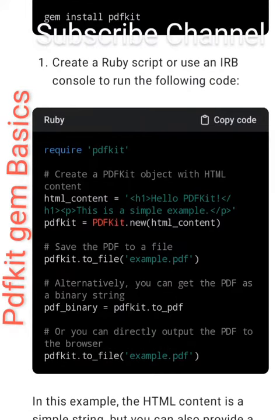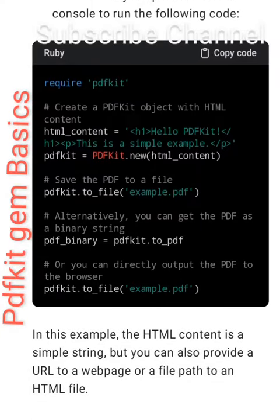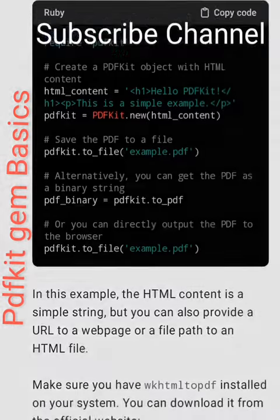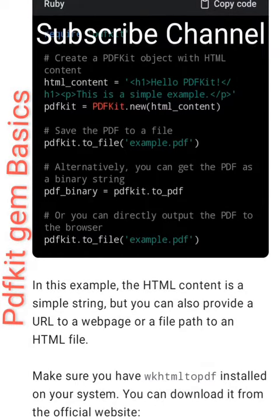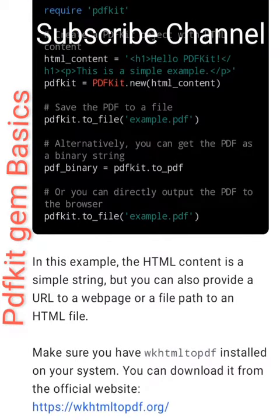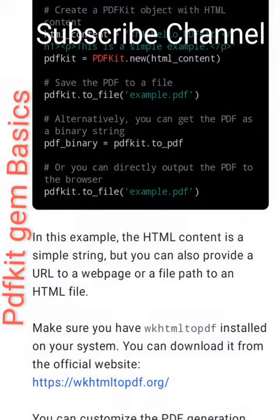Create a Ruby script or use an IRB console to run the following code. Require pdfkit, then create a PDFKit object with HTML content: html_content equals an h1 tag with 'Hello PDFKit. This is a simple example.' Then call PDFKit.new with that html_content.